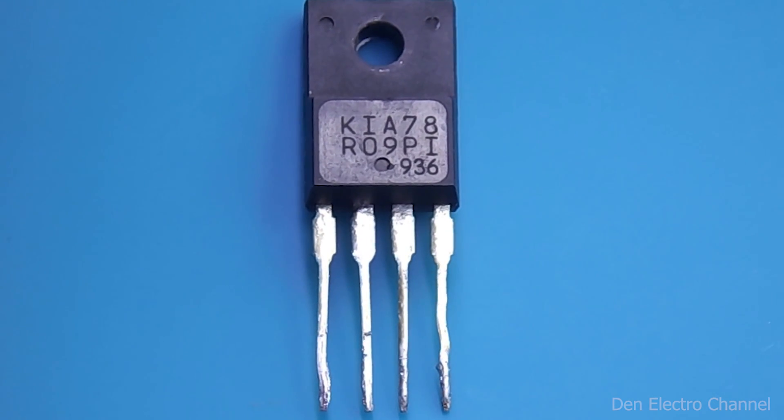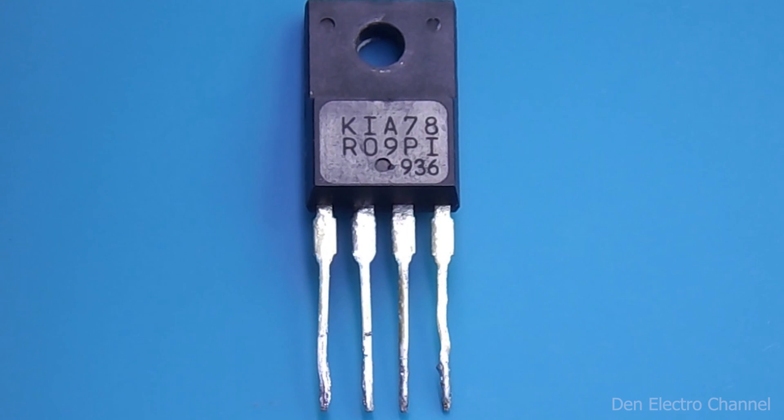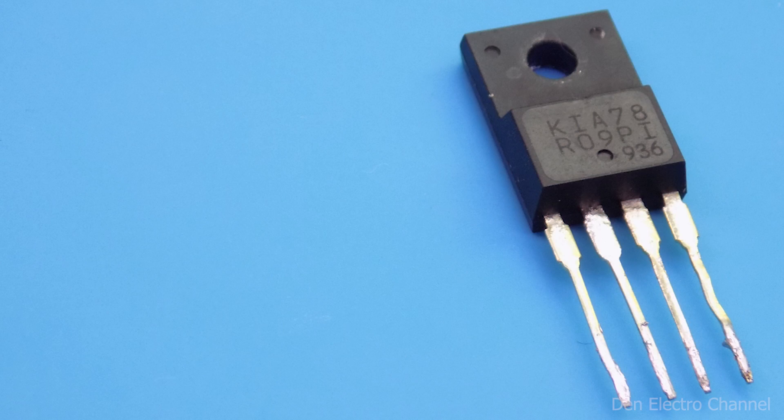Today I will talk about linear stabilizers of the Kia 78R series. These microcircuits come with different output voltages, but the sample I will show in this video is rated at 9 volts.